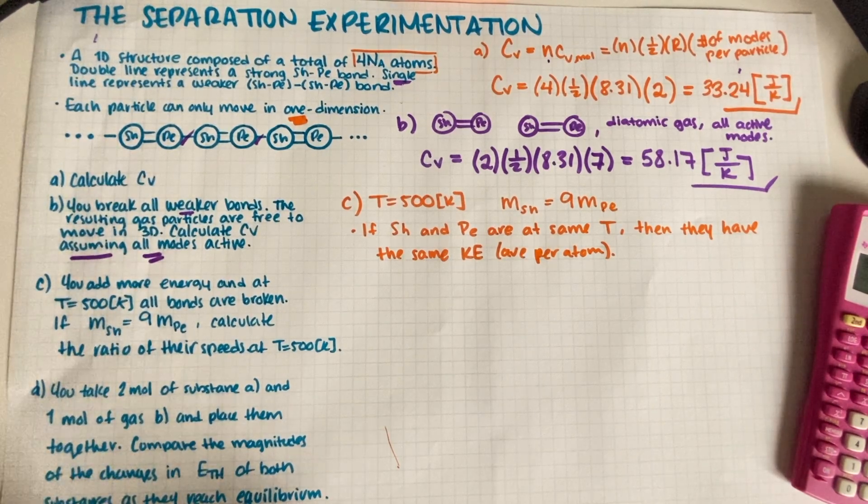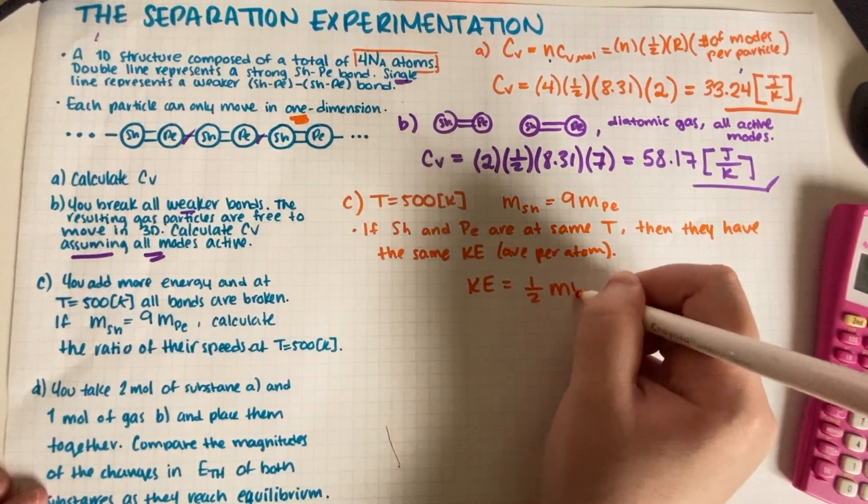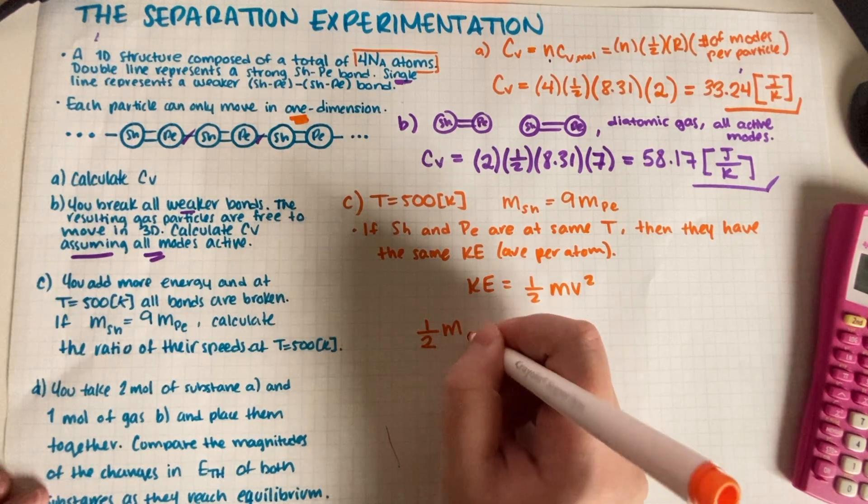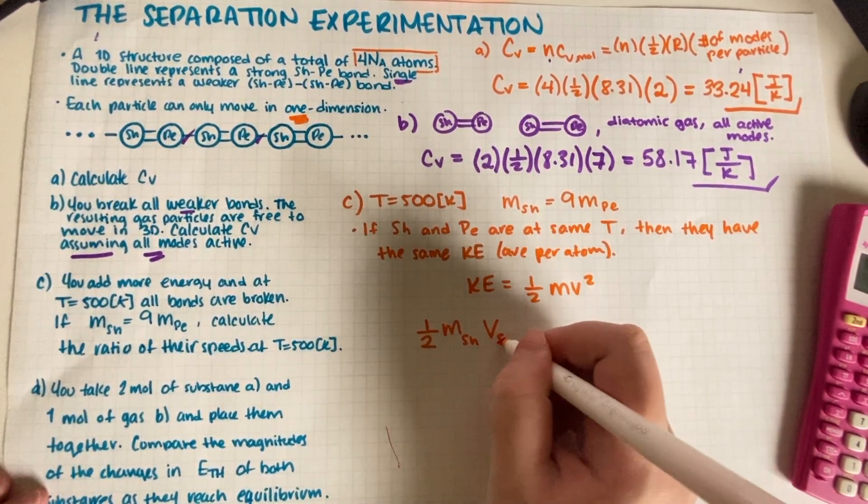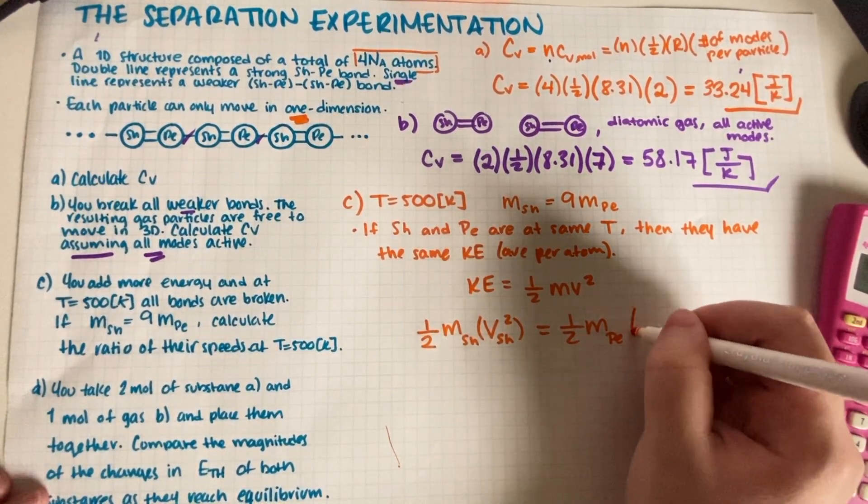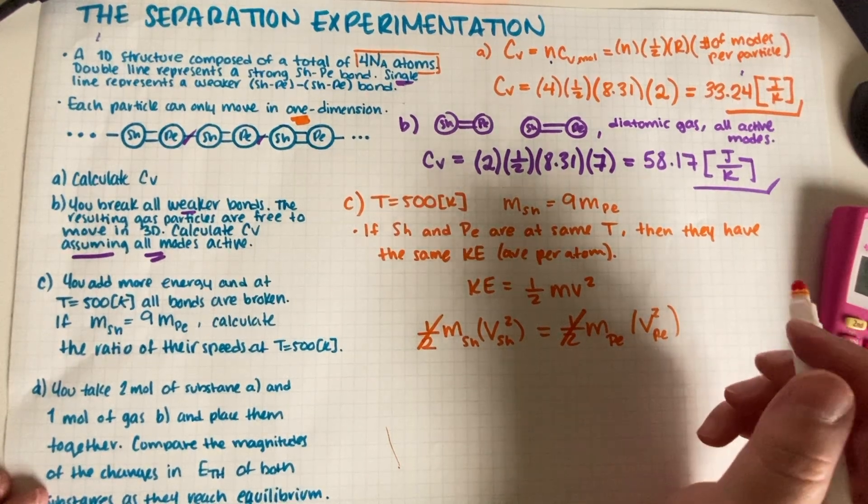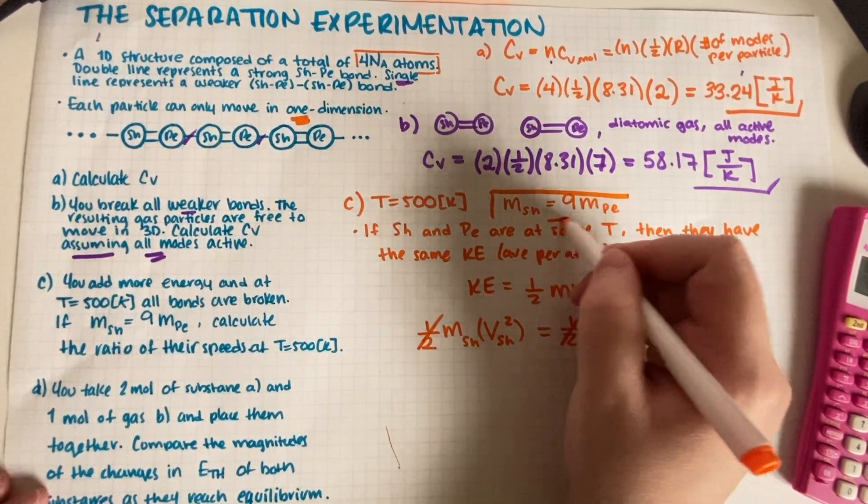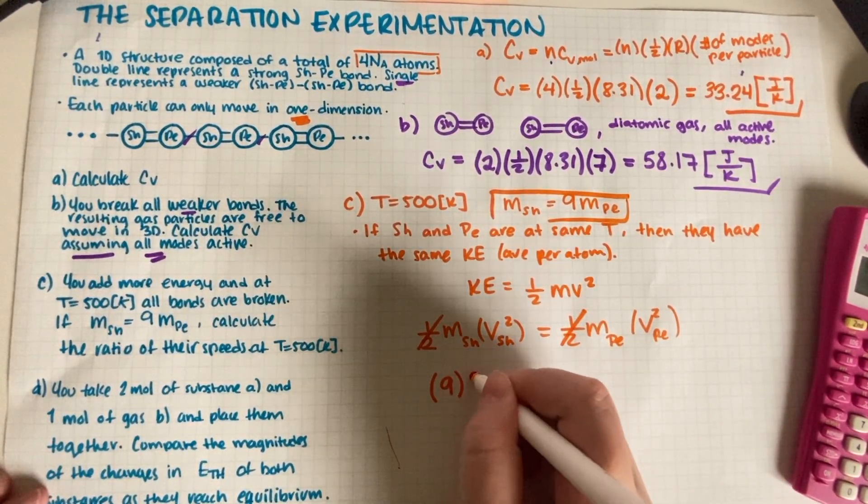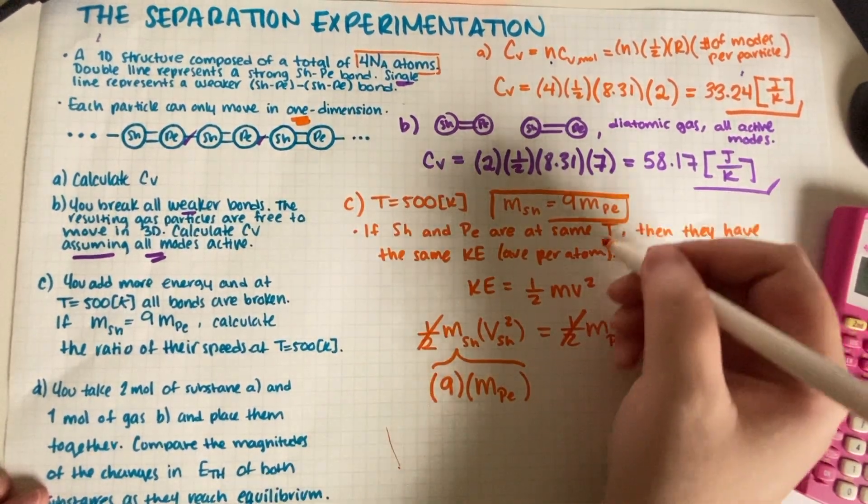So if they have the same kinetic energy and we remember our kinetic energy equation, which is basically KE equals one-half mv squared, this is just an equation for kinetic energy. Then we must make them equal. So one-half mass sheldonium times velocity sheldonium squared equals one-half mass cupertonium times velocity cupertonium squared. The one-half goes away. And then I will also remember this equation. So instead of mass sheldonium, I'm going to write nine times mass cupertonium. This comes from substituting the equation.